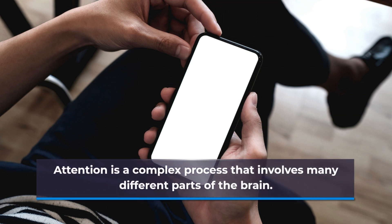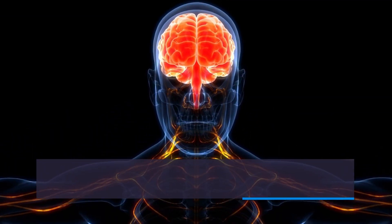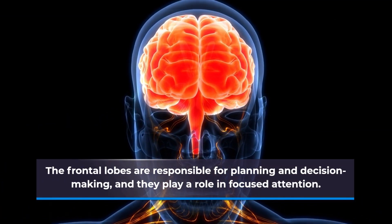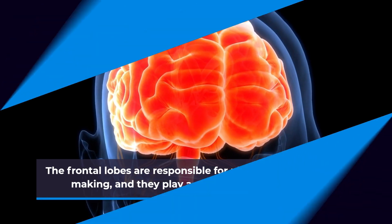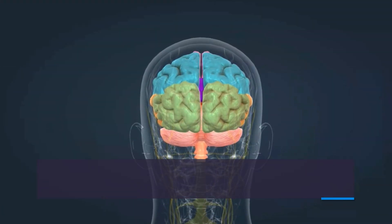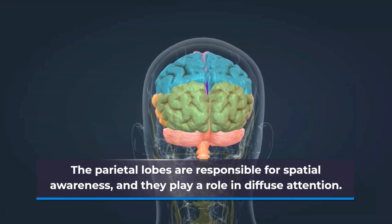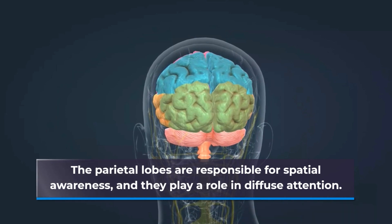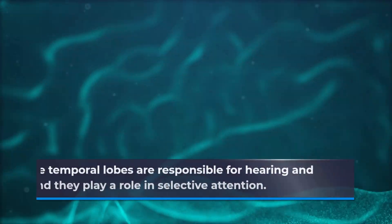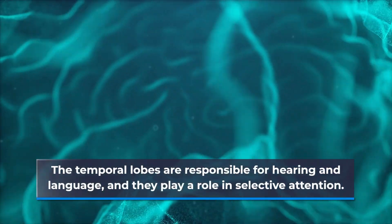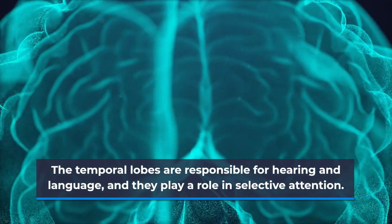Attention is a complex process that involves many different parts of the brain. The frontal lobes are responsible for planning and decision-making, and they play a role in focused attention. The parietal lobes are responsible for spatial awareness, and they play a role in diffuse attention. The temporal lobes are responsible for hearing and language, and they play a role in selective attention.